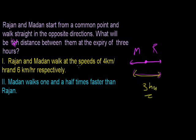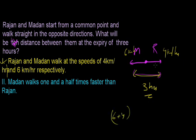Statement one: Ranjan and Madan walk at the speed of 4 km per hour and 6 km per hour. Using the first statement, the total speed is 6 plus 4 equals 10 km per hour, multiplied by 3 hours, giving a distance of 30 km. Yes, I got the answer as 30 km using statement one. Statement one is sufficient to answer the question.